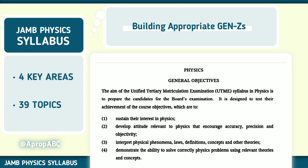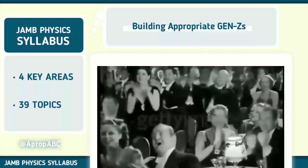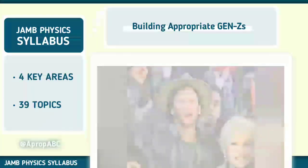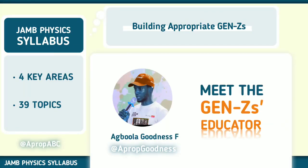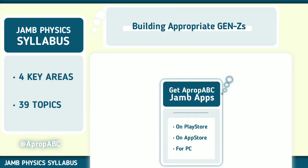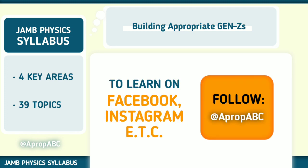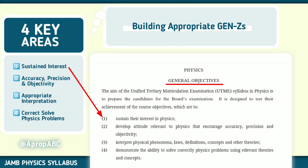This year, JAMB must not jam you. For the JAMB physics syllabus, there are four key areas that JAMB would like you to note as you prepare for your examination. You have the first one to be sustained interest in physics. When you started in physics, the interest you had - is it reduced? Or you don't even have interest at all. They want you to have solid interest in physics. So your interest is number one.